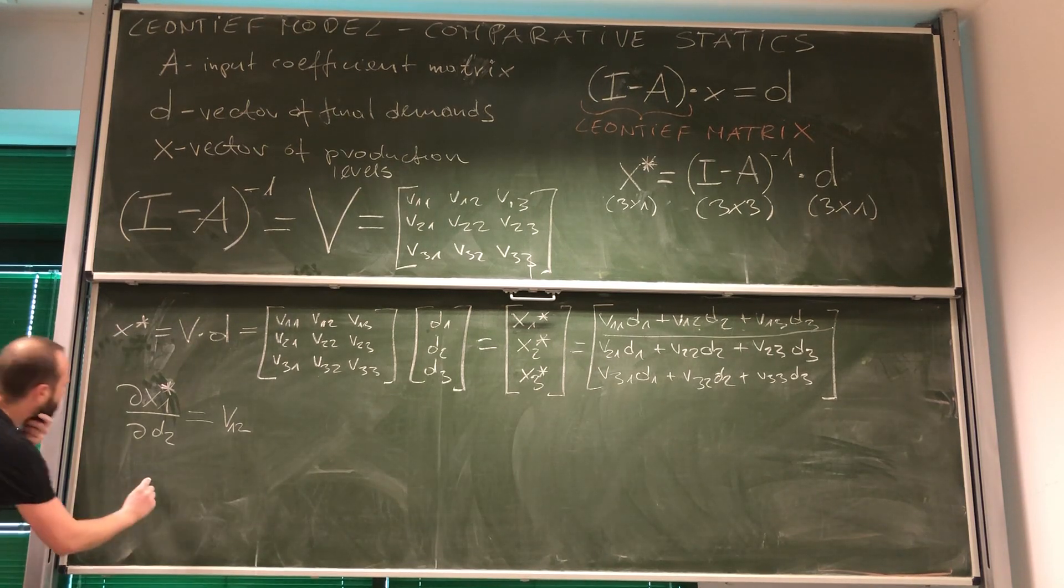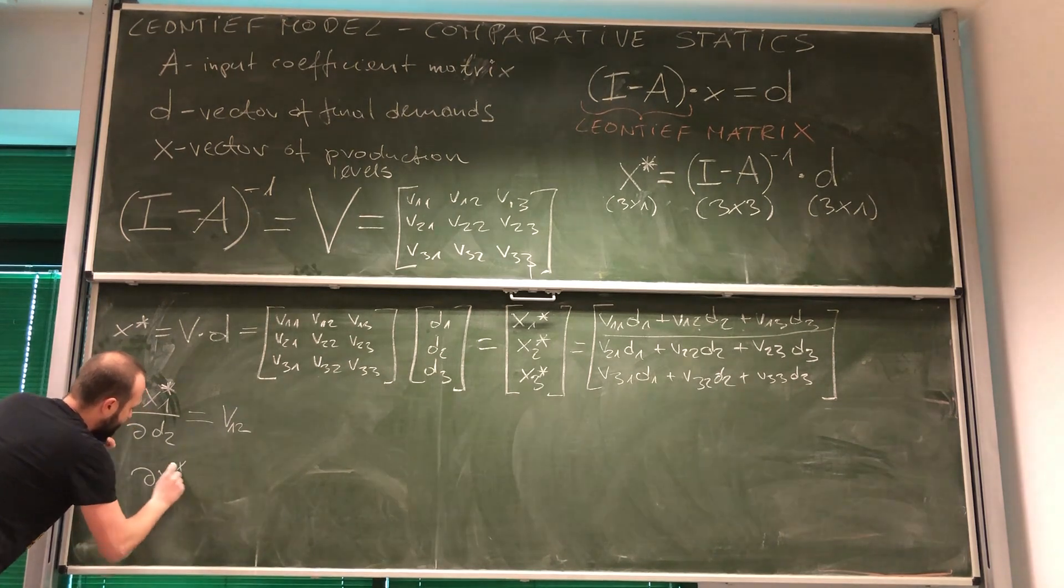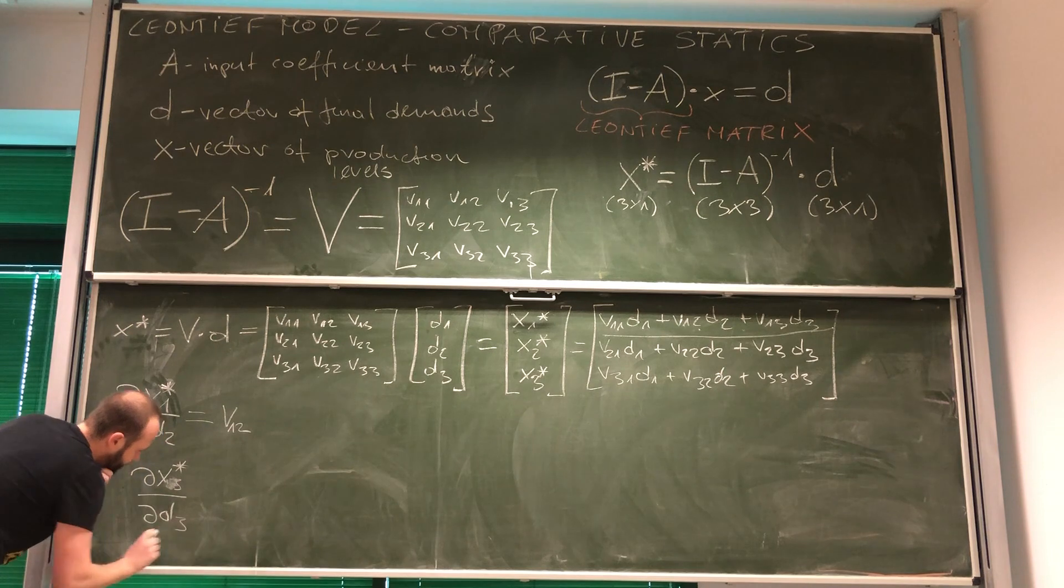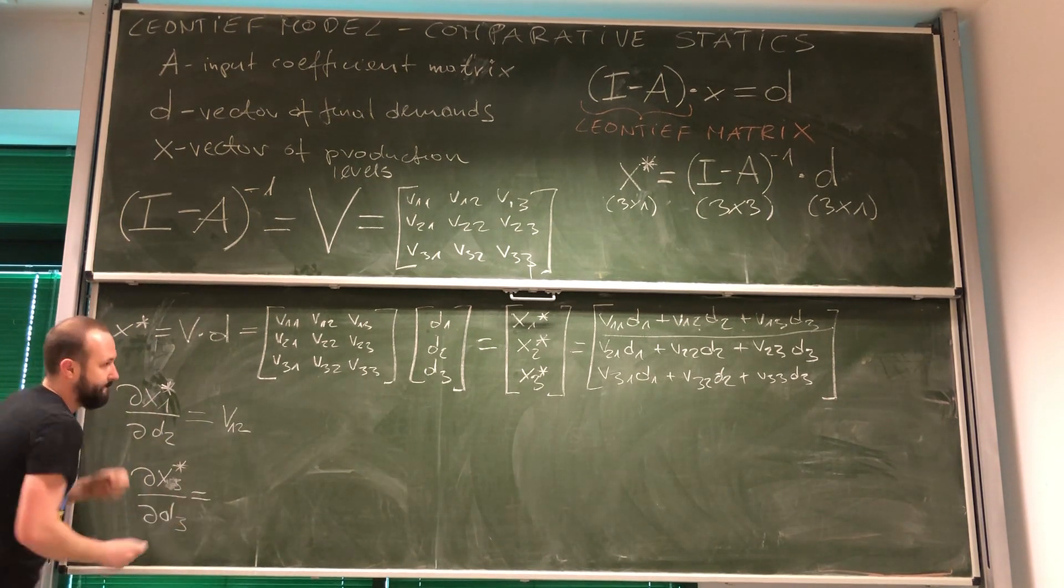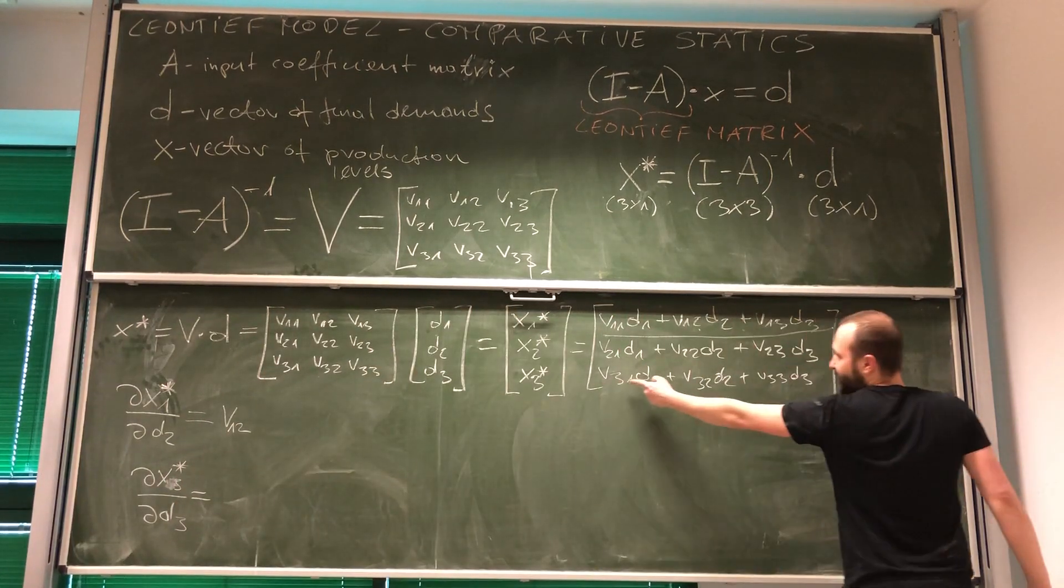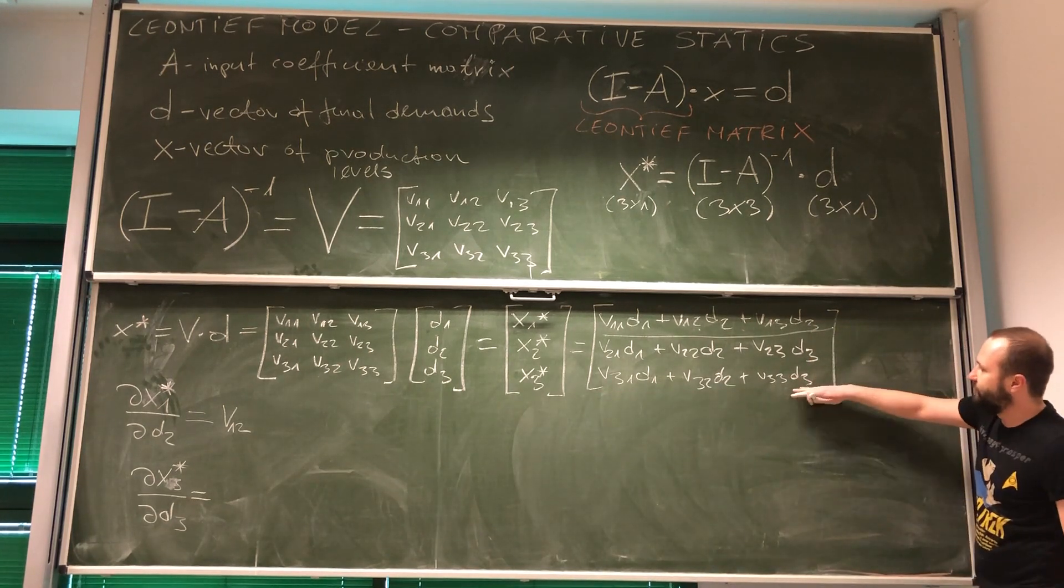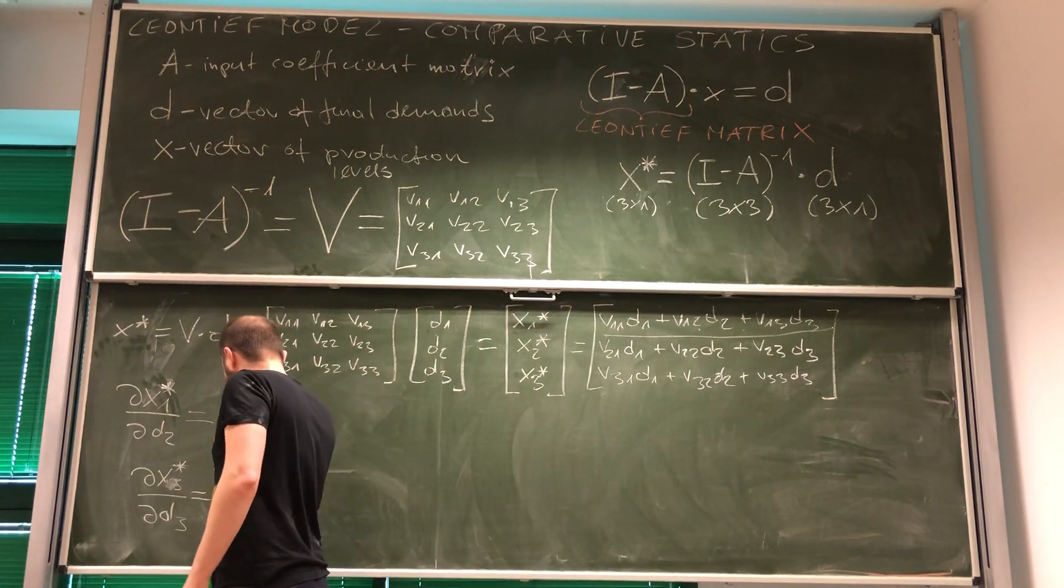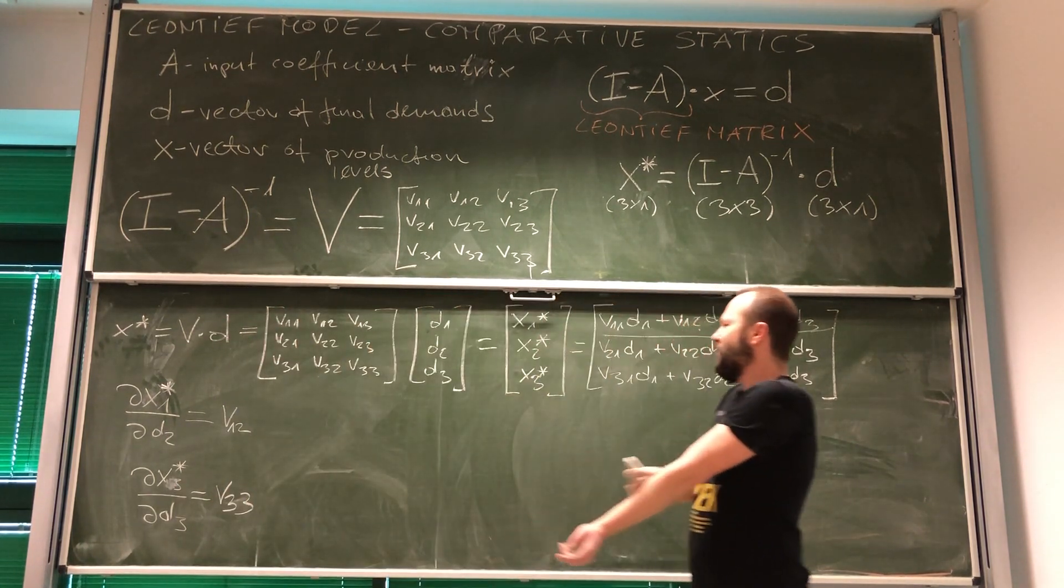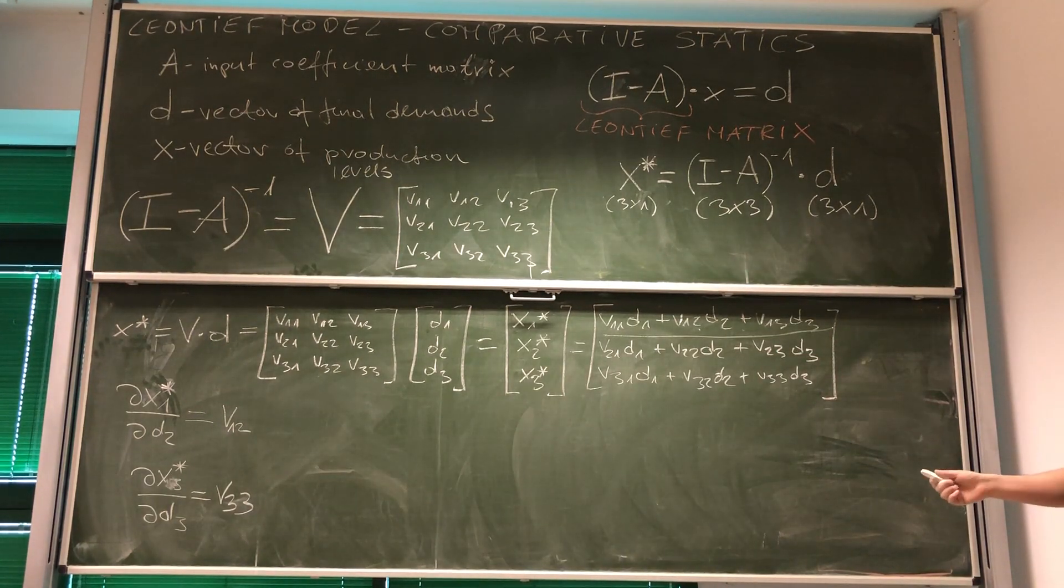So what if I want to know what happens to the level of production of good 3, if the demand for good 3 goes up? Well, again, here we've got a level of production of good 3. We differentiate this with respect to D3. So we've got V3 3. Well, okay, but if this is so easy, maybe there's a more compact way of doing, of going about it.